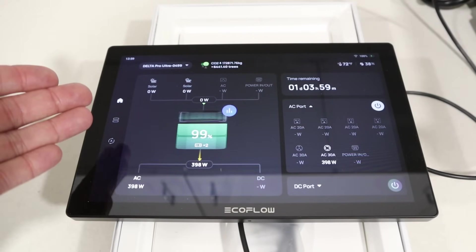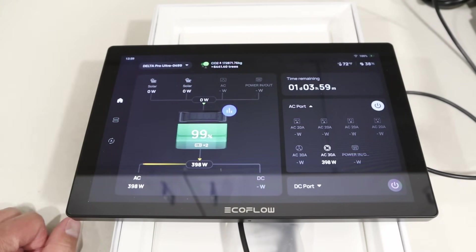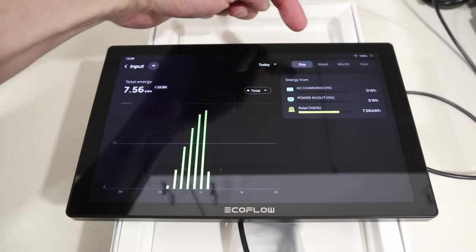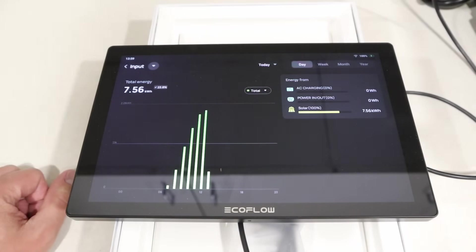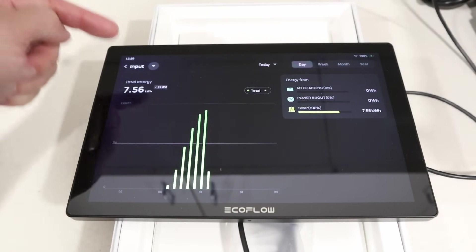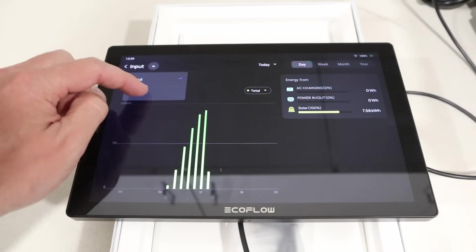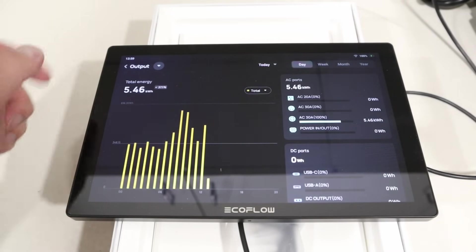Another really cool feature of the Power Insight tablet and the EcoFlow smart app is the data logging that this does. You can break it down per day, week, month, or year. And I'll just show you some of the information, the breakdowns of the months that I've been using this. But first, the input for just today, we're getting 7.56 kilowatt hours from solar input. And on the output, we have 5.46 kilowatt hours so far. And I love that it breaks it down per hour.